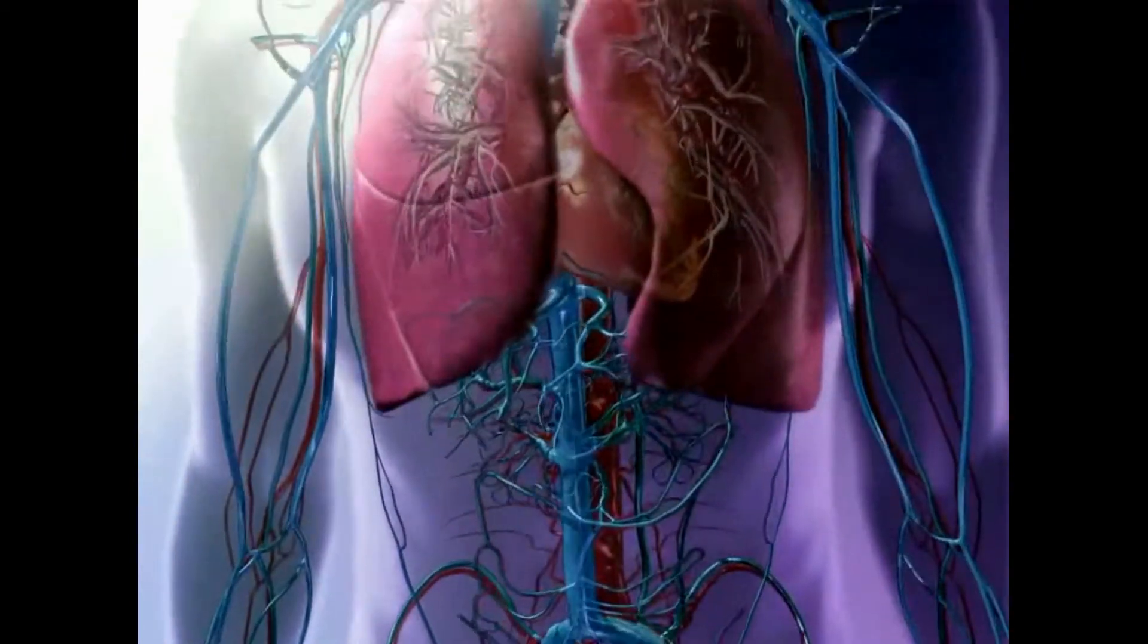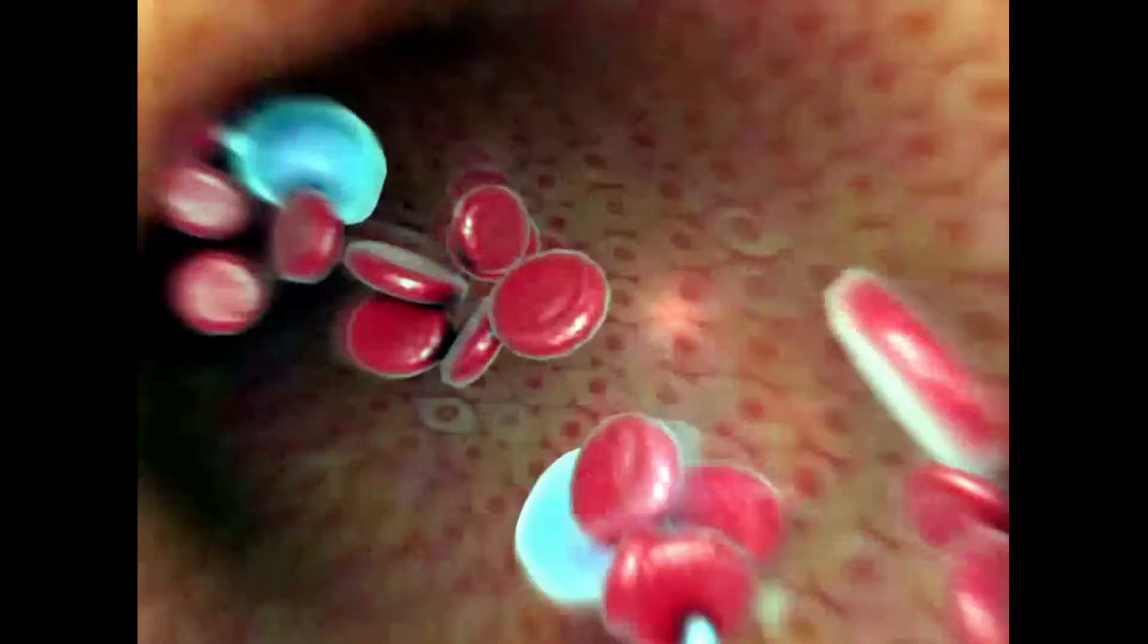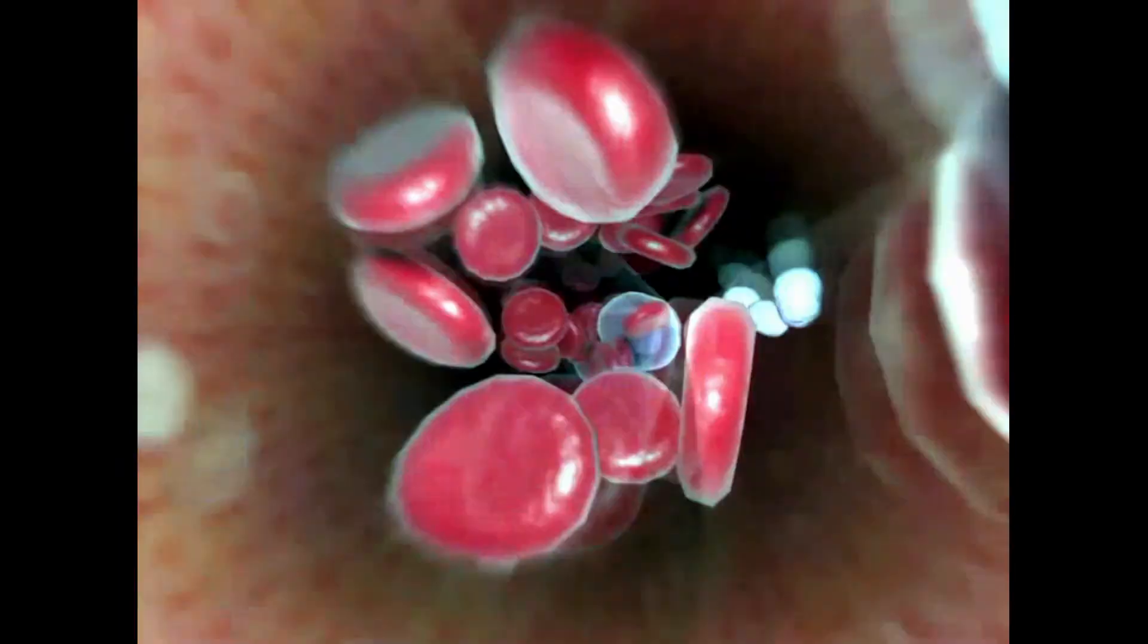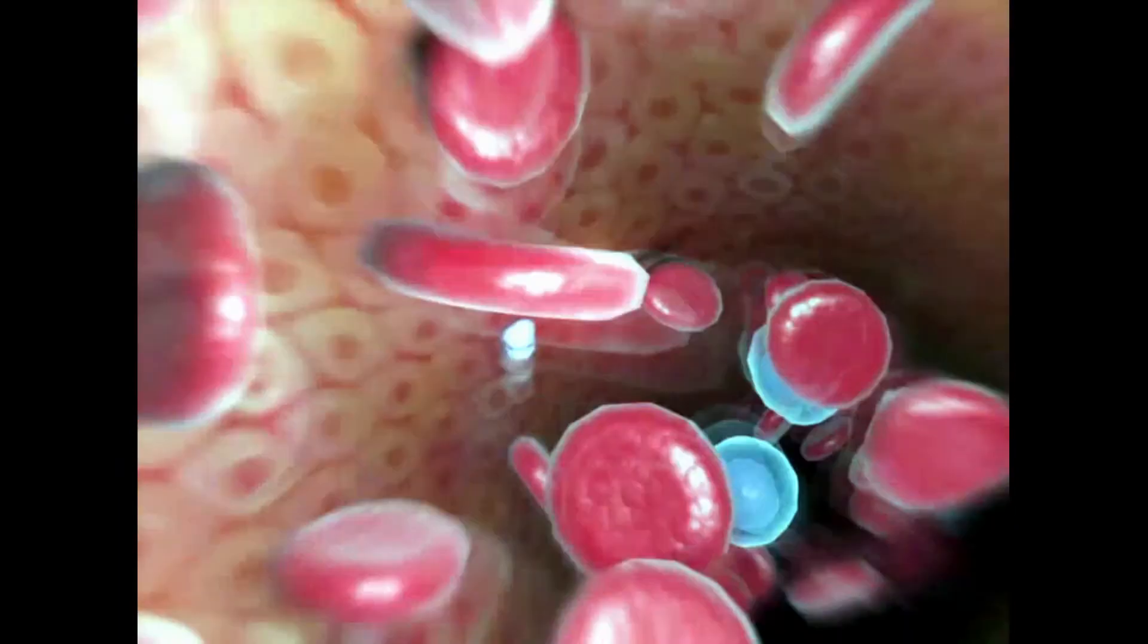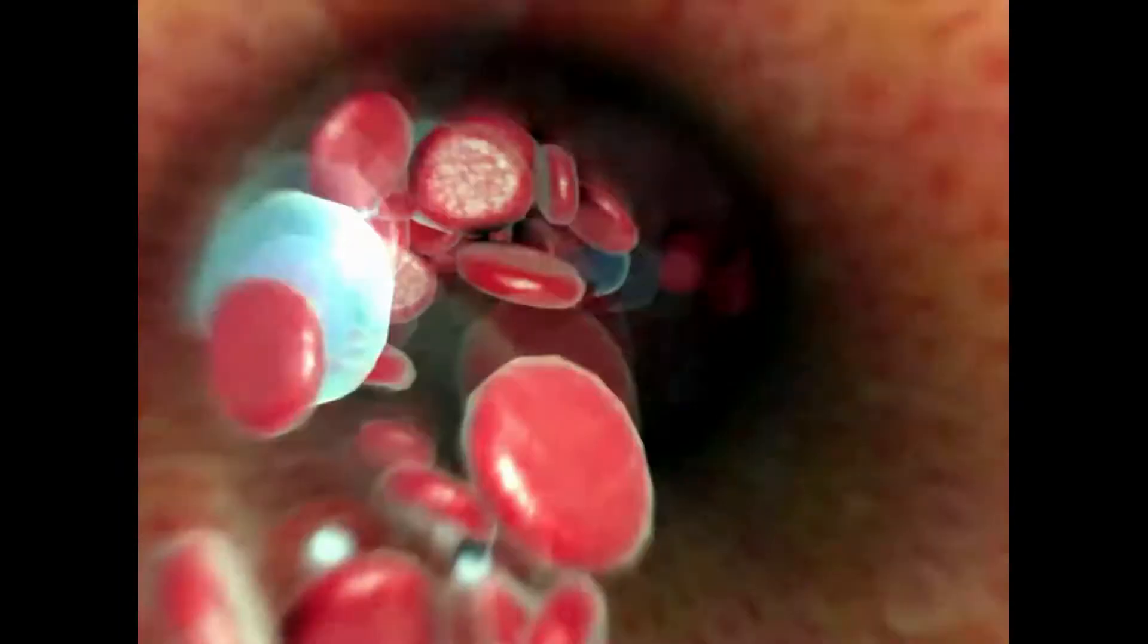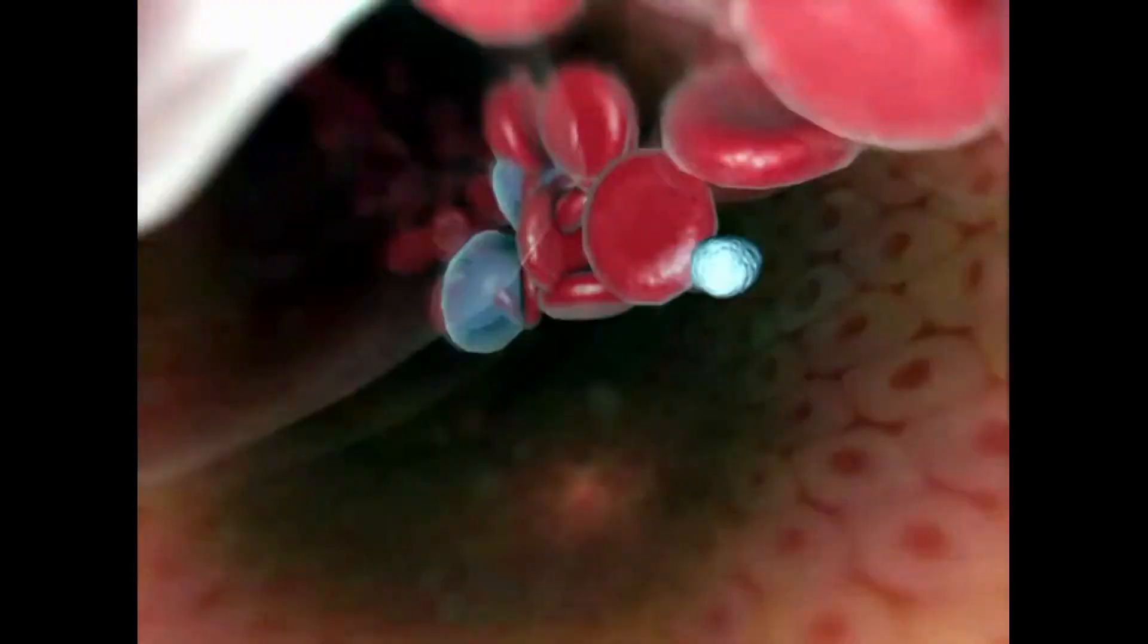Cell fragments called platelets, or thrombocytes, make up about two percent of blood. Platelets stop blood loss from damaged vessels. When a blood vessel tears, platelets at the site adhere to the wall of the vessel to close the tear.